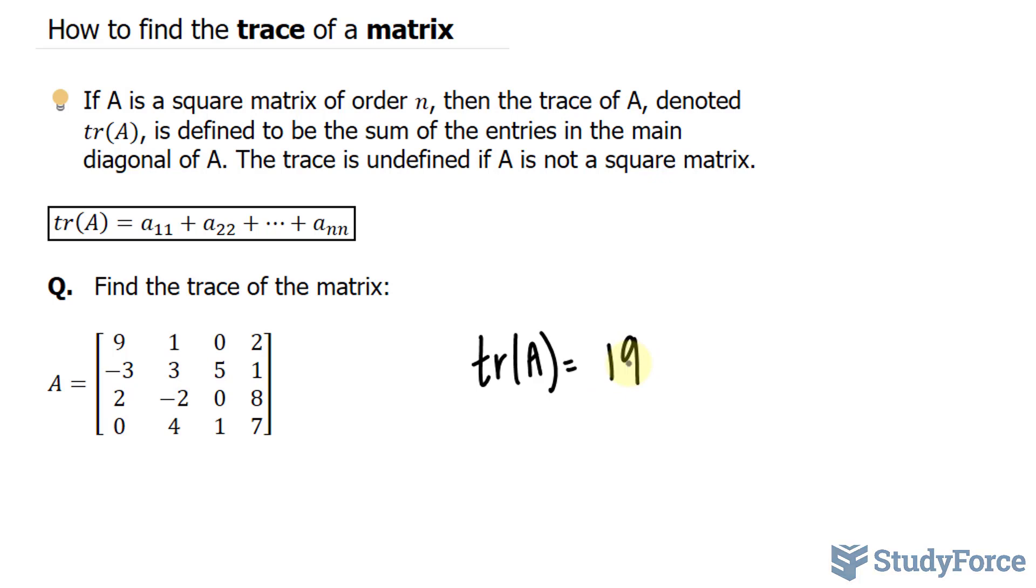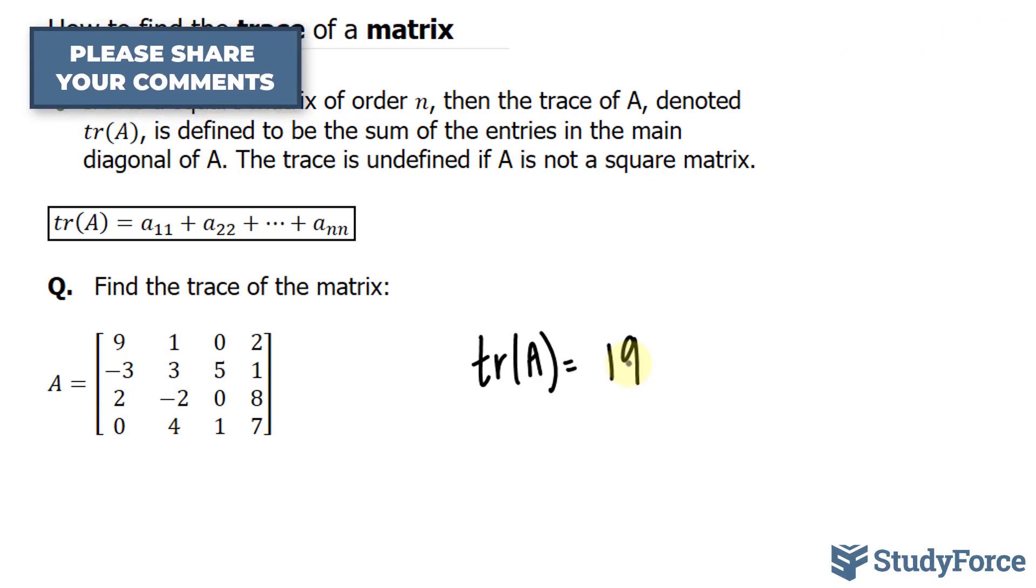Now the reason why we find the trace of the matrix is because it's a property that allows us to quantify the complexity of a matrix. So if we have two models that explain the data equally well, the one whose trace is smaller is the one that's simpler, and that's the one that is used.